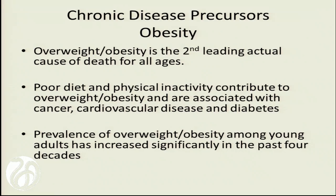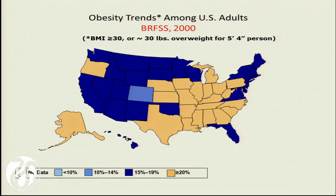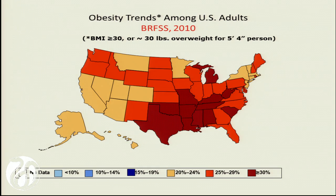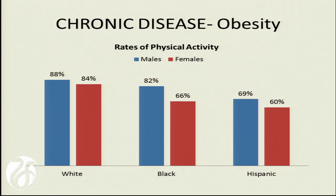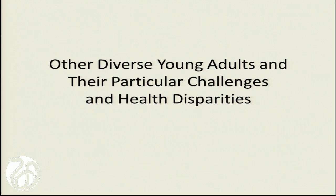Obesity is a major factor — poor dietary choices and inactivity contribute to obesity, and it is actually the second leading cause of death. Looking at graphs over time, obesity has changed so much that they have to change the scale and the color: greater than 10% used to be the maximum, and now it's actually greater than 30%. While many individuals do engage in physical activity, there are racial disparities, with Hispanic young adults having less physical activity. Girls also report less physical activity.